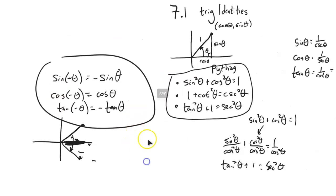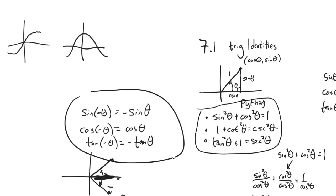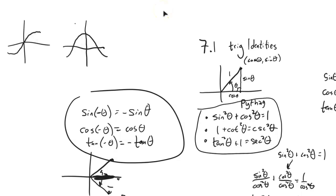Just to get at that vocabulary: if you think about the graph of sine at the origin, it has rotational symmetry — that's called an odd function. Cosine has reflective symmetry — that's called an even function. That's just where the vocabulary 'even-odd' comes from.